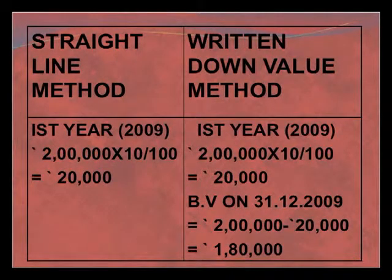There are comparisons between these two methods. In the straight line method, in the first year, the cost of the machinery is 2 lakh and the depreciation at the rate of 10% comes to rupees 20,000. In the written down value method also, we calculate the depreciation on the cost of the asset — 2 lakh at 10% — giving depreciation of 20,000. After charging depreciation of rupees 20,000, the book value of the asset goes down to 1 lakh 80,000.